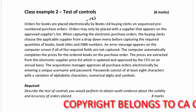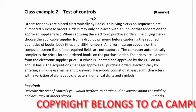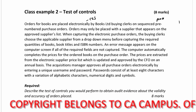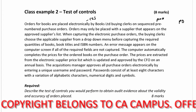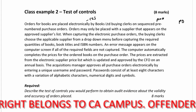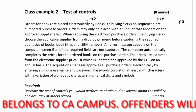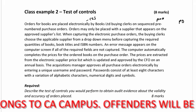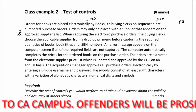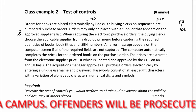There are sequenced pre-numbered purchase orders, so we have a pre-numbering control. Orders may only be placed with a supplier that appears on the approved supplier listing, giving us an authorization control — the approved supplier listing.